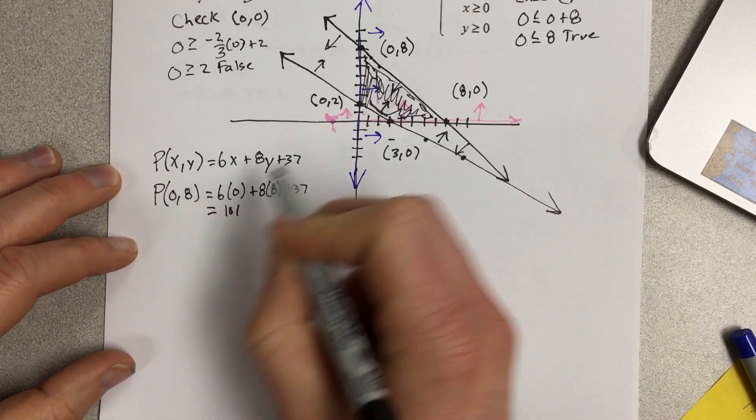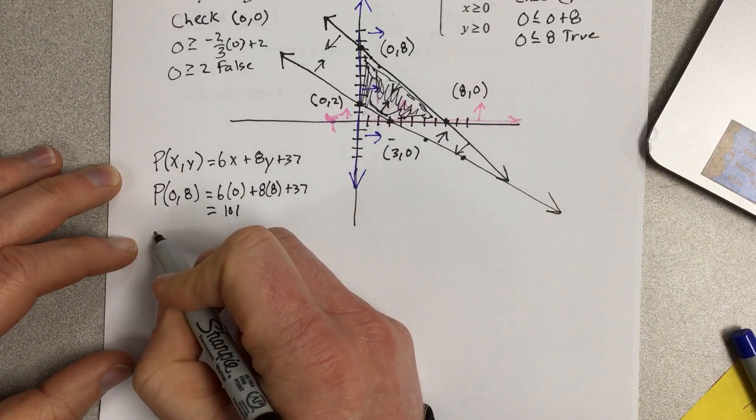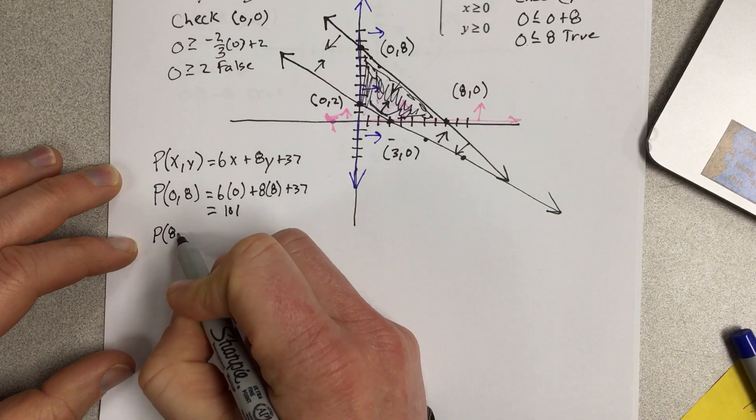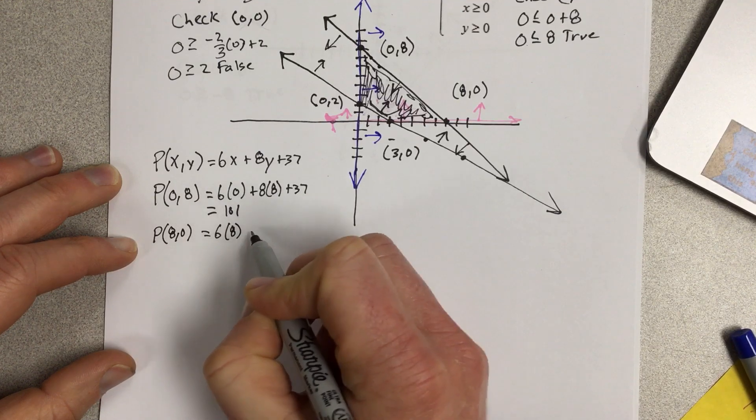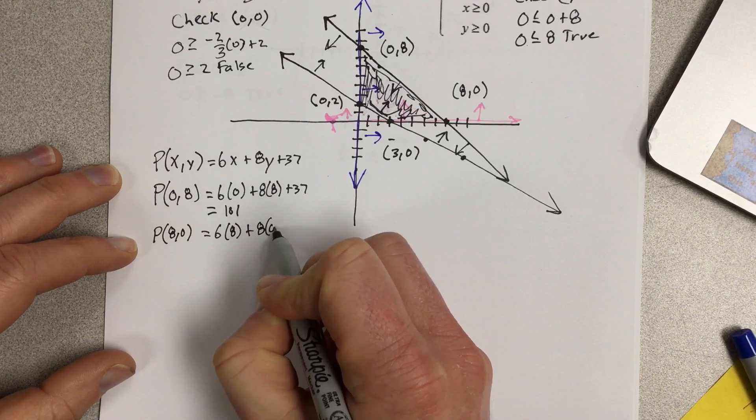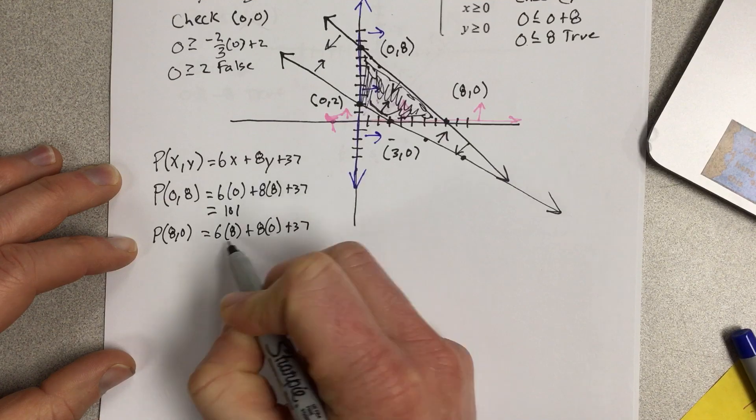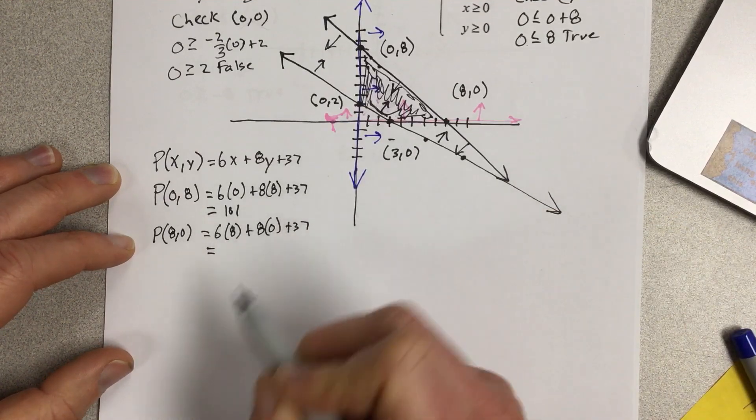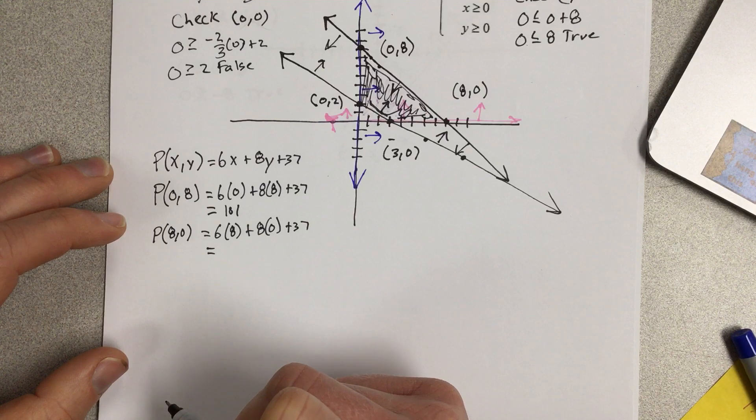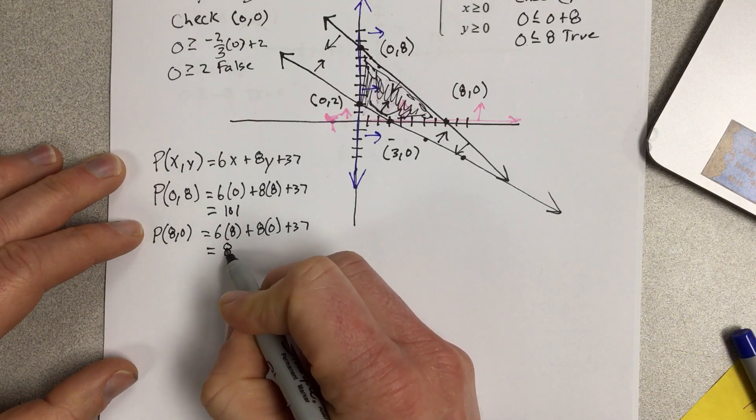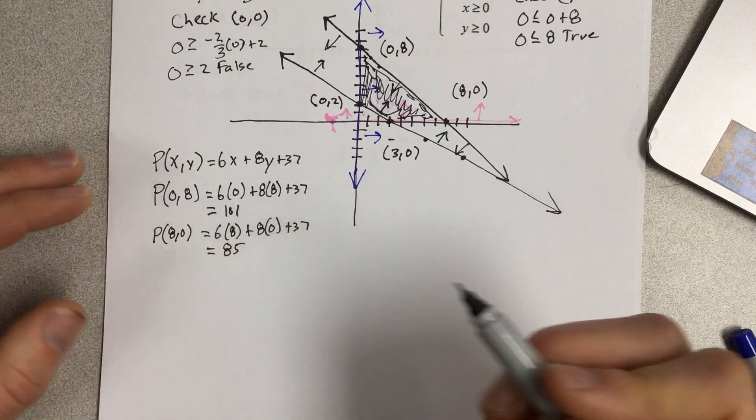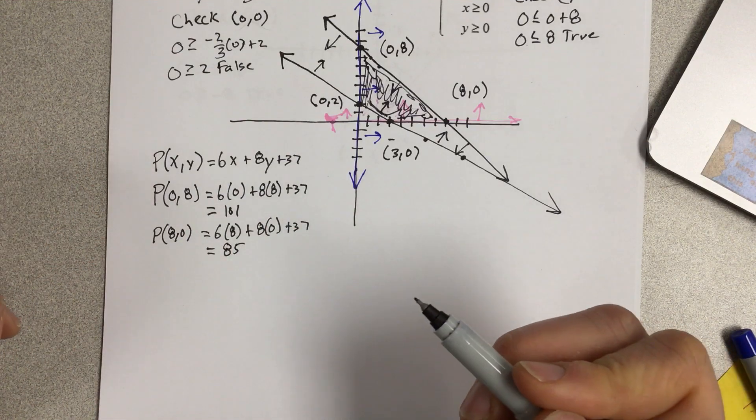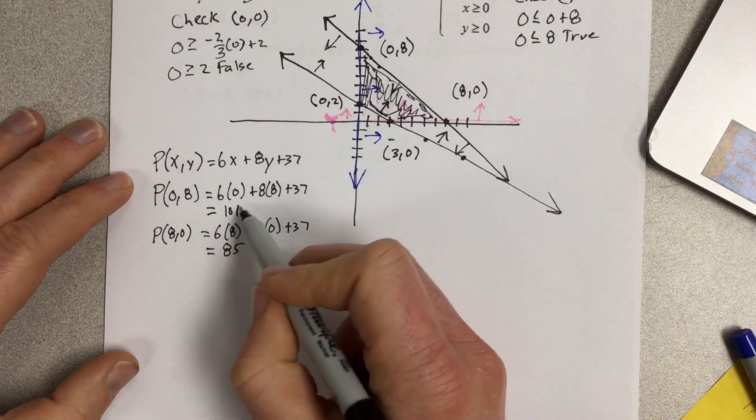And then we're going to plug in 8, 0. So we're going to say P of 8, 0, that's 6 times 8 plus 8 times 0 plus 37. That gives you 48 plus 37, so that's going to be 85. So you can see that this coordinate is producing a higher value, so that's our maximum for right now.